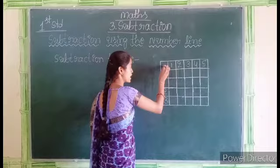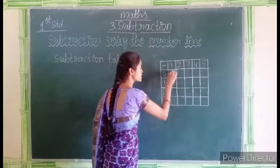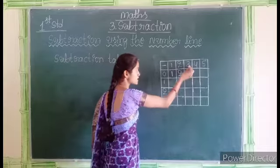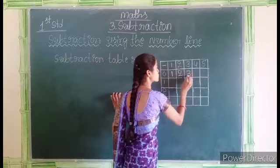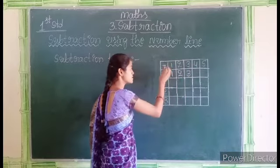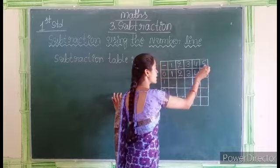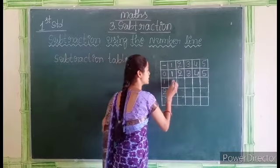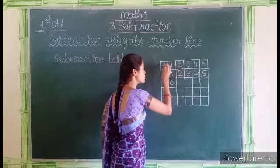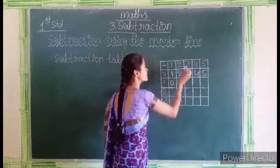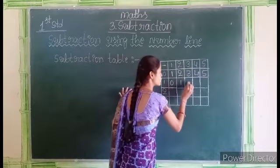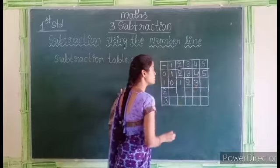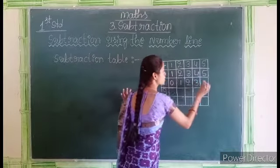Let us subtract. 1 minus 0 is 1. 2 minus 0 is 2. 3 minus 0 is 3. 4 minus 0 is 4. 5 minus 0 is 5. 2 minus 1 is 1. 3 minus 1 is 2. 4 minus 1 is 3. 5 minus 1 is 4.